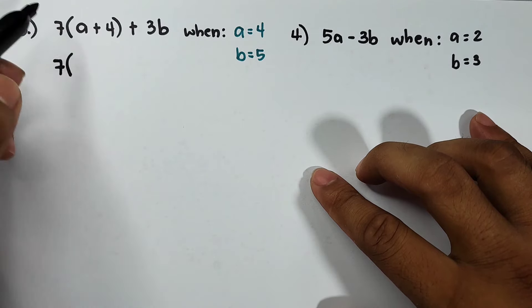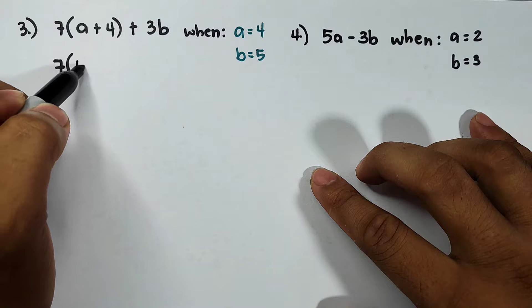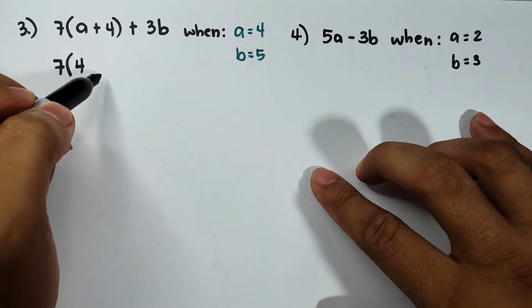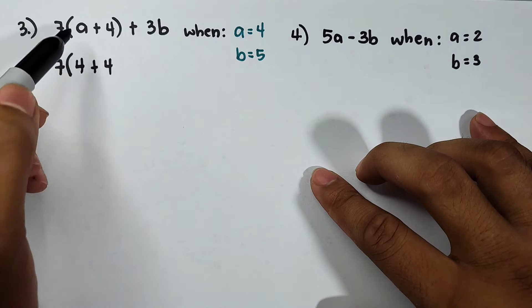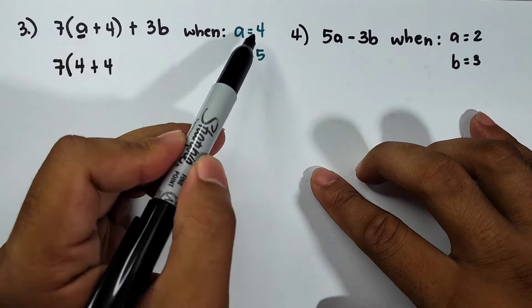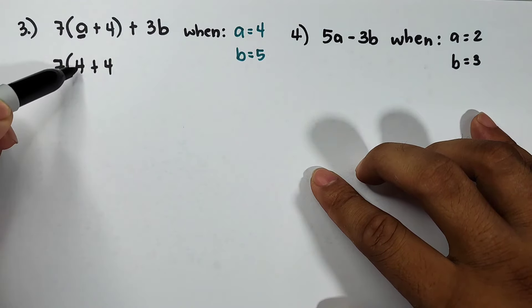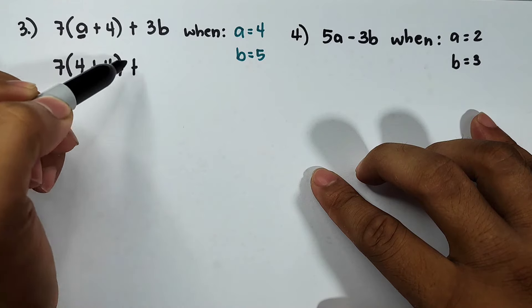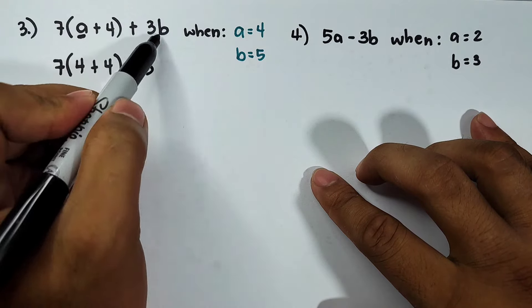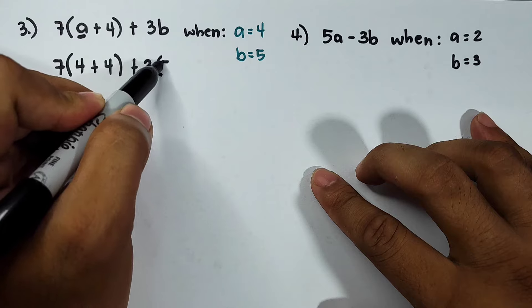7 times your a which is equal to 4, then plus 4. Again, this variable a is replaced by 4 because a is equal to 4. So it will become like this. Then plus 3, your b is 5, times 5.